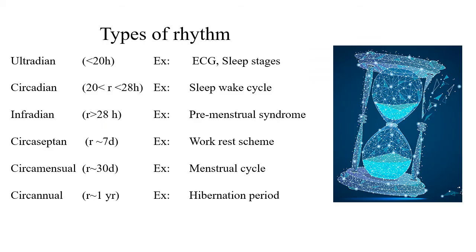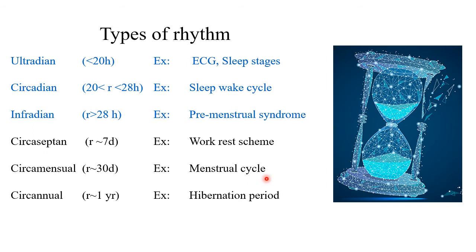The rhythmicity can be categorized as: ultradian — within 20 hours, examples being ECG and sleep cycle; circadian — between 20 to 28 hours, example sleep-wake cycle; infradian — premenstrual syndrome; circaseptan — for seven days; circamensual — menstrual cycle, duration approximately 30 days; and circannual — around one year, example hibernation period.